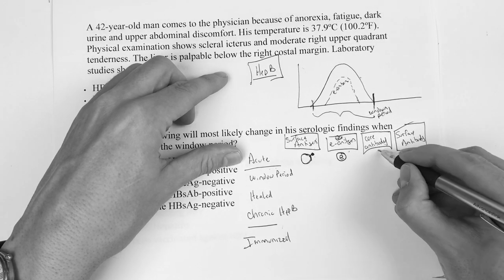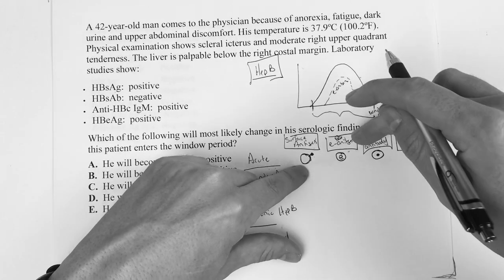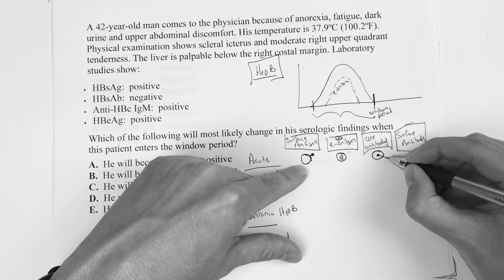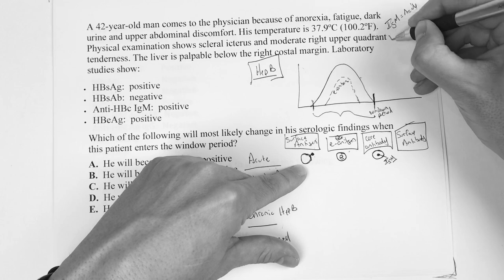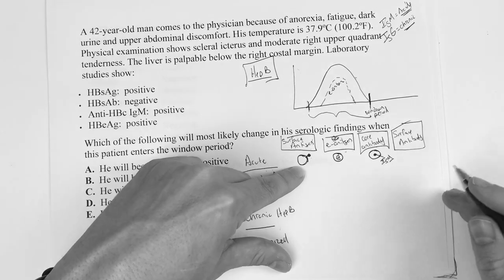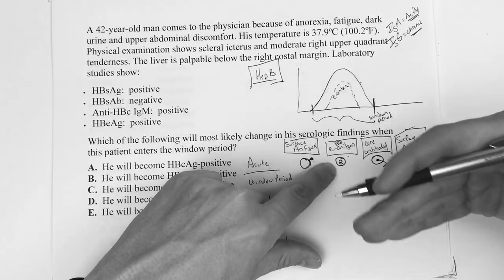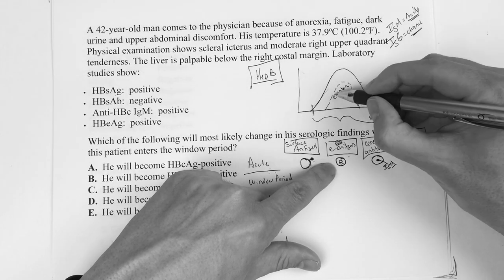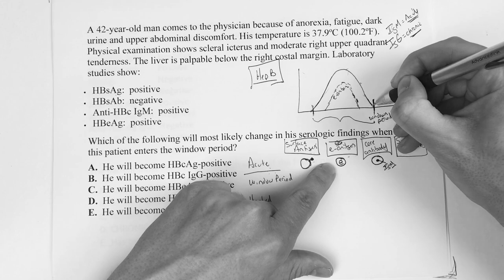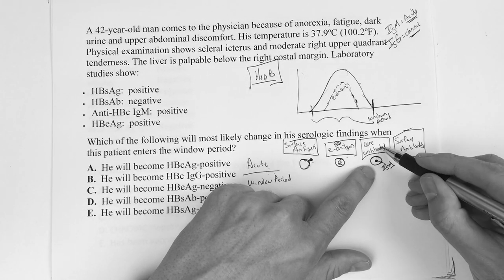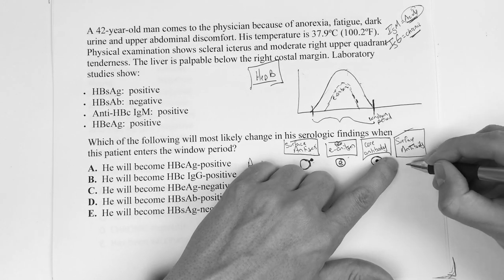But your big take-home point is this E antigen falls underneath him. He goes up and comes down before the window period begins. The core antibody in this phase is going to be IgM because we know that IgM means acute. We're in the acute phase of hepatitis B. We've got a surface antigen, we've got this E antigen showing viral replication, and we have the core antibody form as IgM because it's acute. Is there a surface antibody yet? Haven't had enough time, so he's not there.